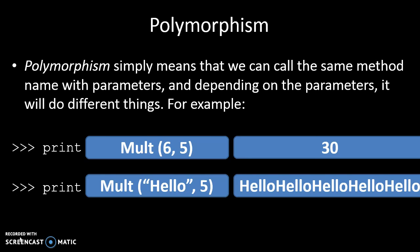Now I know we don't necessarily view it like that because we just see 6 star 5, but when it's called by the Python compiler, it's converted into this multiply thing. And the multiply thing will do different things depending on what parameters come into it.